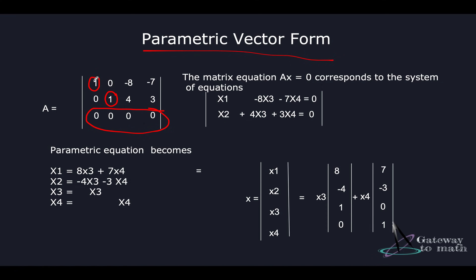Writing this in the form of a linear system: x1 + 0·x2 - 8·x3 - 7·x4 = 0, and x2 + 4·x3 + 3·x4 = 0. Now to write this in parametric form, I find the number of columns — we have four columns, so x1, x2, x3, x4. From the equations: x1 = 8·x3 + 7·x4, and x2 = -4·x3 - 3·x4.